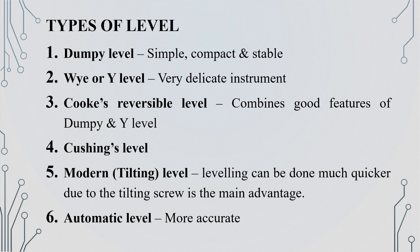The following are types of levels. The first one is the Dumpy level — it is simple, compact and stable. The second one is the Y level, which is a delicate instrument. The third one is Cooke's Reversible level, which has good features of both the Dumpy level and Y level.